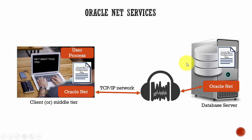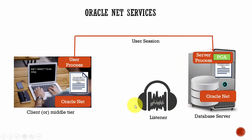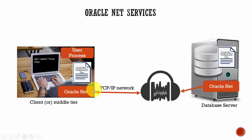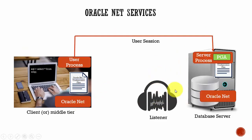Once the connection is established, there will be no further communication between the client and the database server through the listener. A new server process is created in the database server, and once control passes to the server process, the listener no longer deals with the connection — all the work is done by the server process. The user process and the server process communicate directly. Only initially, until the connection is established, do we need the Oracle Net service on both machines and the listener.